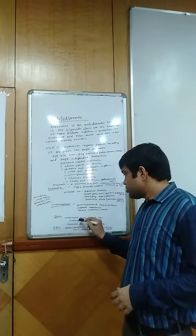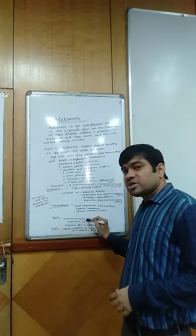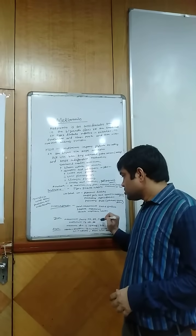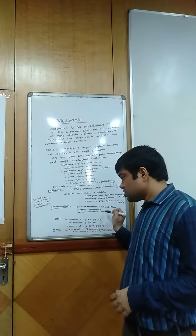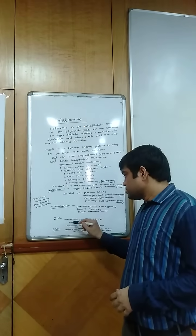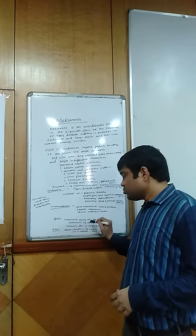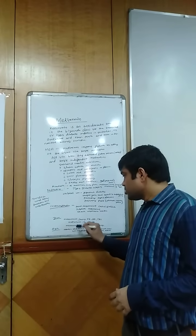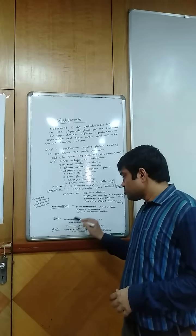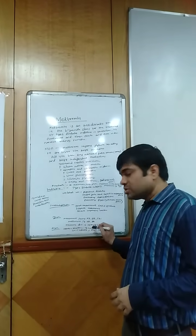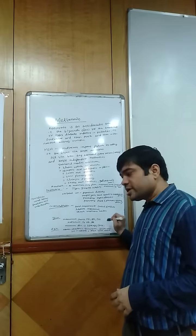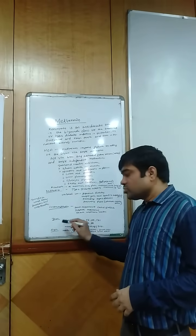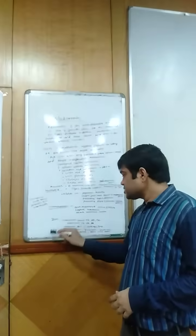The dose of Metformin can be given as 500mg once daily, twice daily (BD), or three times daily (TDS), or as Metformin 1g once or twice daily. The maximum dose of Metformin should be 2500mg per day.